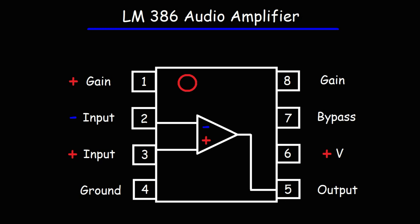In this video, we're going to talk about how to create an audio amplifier circuit using the LM386 operational amplifier. Here is a block schematic of that device. Pins 1 and 8 are used for gain control. Pin 2 is the inverting input. Pin 3 is the non-inverting input. Pin 4 is connected to ground, which you can also connect to the negative terminal of the battery. Pin 6 you would connect to the positive terminal of the battery. Pin 7 is the bypass, which you're going to use if you want to increase the gain. And pin 5 is the output.